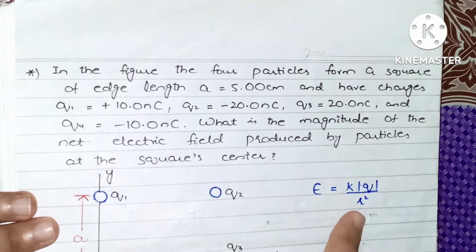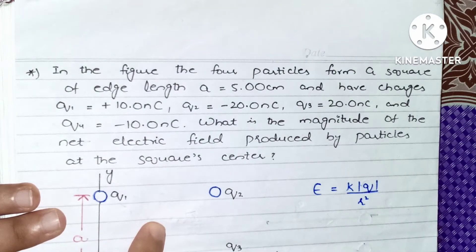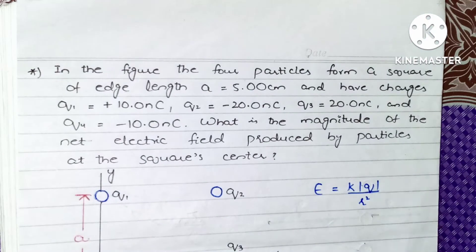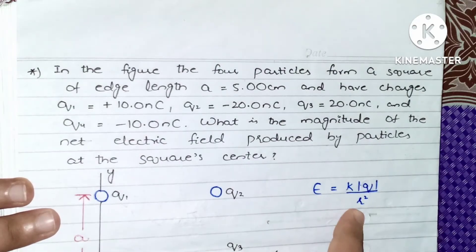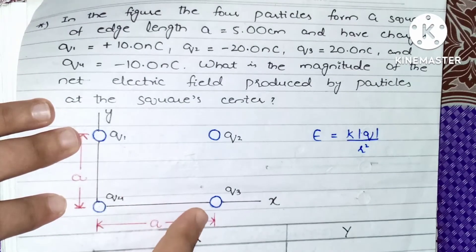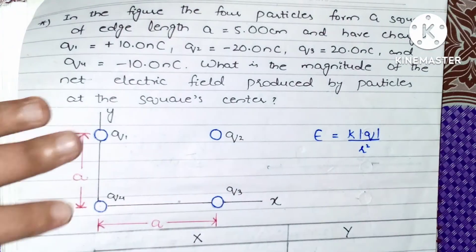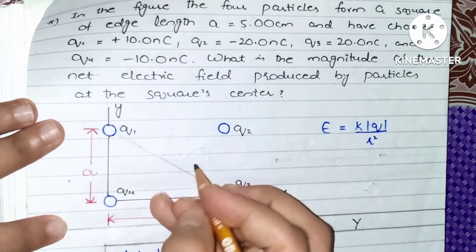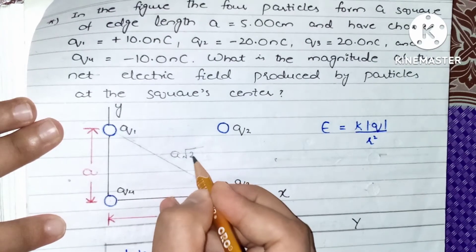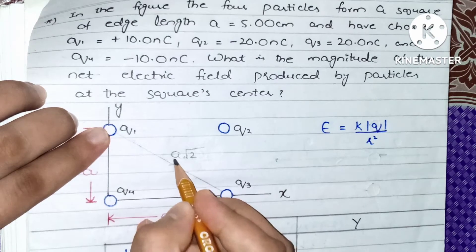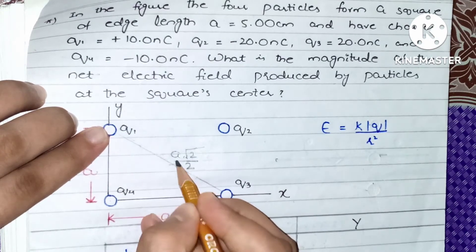We are not given the distance from the charge particle to the center of the square, so first we have to work out r — the distance — and then we can substitute the values and find the electric field. To find this distance r, we can form a right angle triangle in our diagram and apply the Pythagorean theorem. This gives us a√2, but since we need the distance to the center, the distance r will be a√2 over 2.